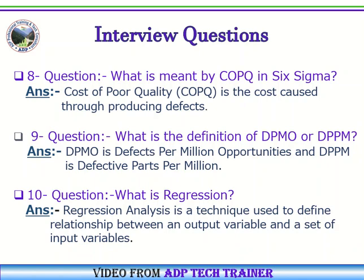Question Number 9: What is the definition of DPMO or DPPM? Answer: DPMO is Defects Per Million Opportunities and DPPM is Defective Parts Per Million. Question Number 10: What is regression? Answer: Regression analysis is a technique used to define the relationship between an output variable and a set of input variables.